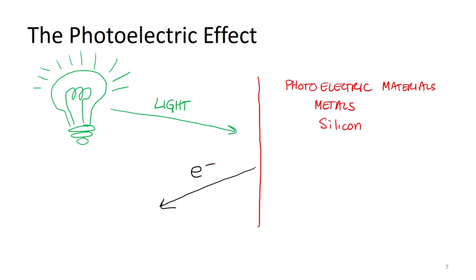Another area in which the photoelectric effect is very important is for silicon in solar cells. More simplistically, this is how solar electricity works: you get light from the sun, it shines on the photoelectric material, the material kicks off electrons. If you get electrons being produced and you can use the flow of electrons — that's electricity. So essentially that's how solar cells work as well.